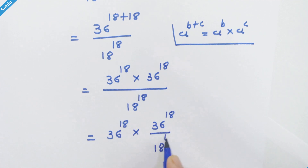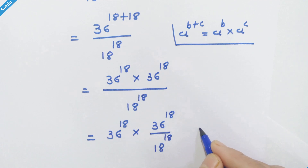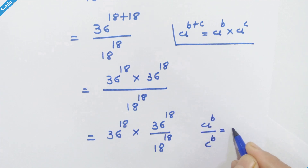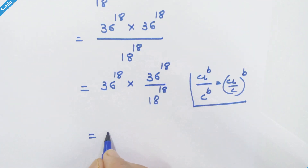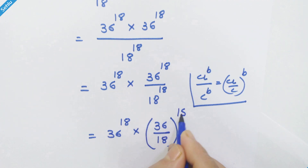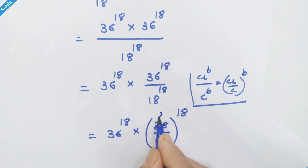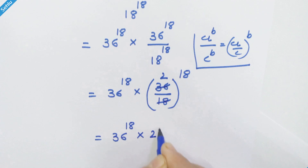Now we will split this part, so we have 36 raised to 18 into 36 raised to 18 upon 18 raised to 18. Here we have the same exponent in the numerator and denominator. Using the rule a raised to b over c raised to b equals a upon c whole raised to b, we get 36 raised to 18 into 36 upon 18 whole raised to 18, which gives 36 raised to 18 into 2 raised to 18.